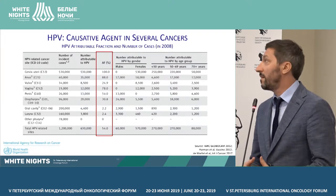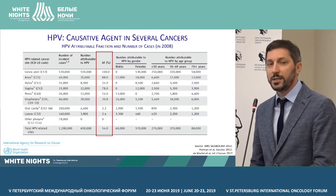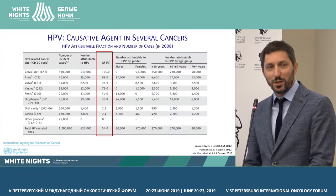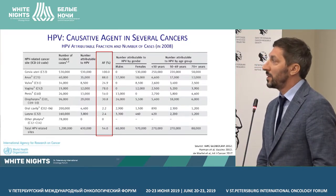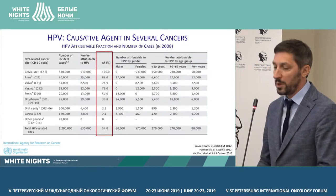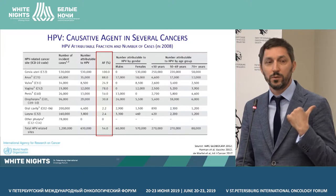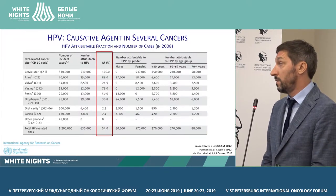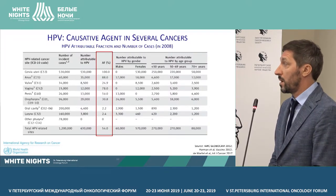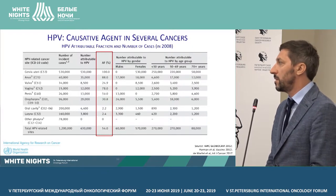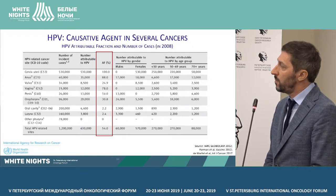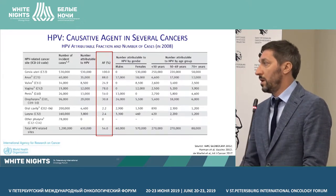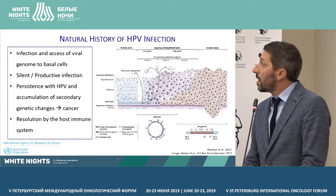HPV has been approved as a factor leading to different types of cancer. It is responsible for 100% of cervical cancer and over 90% of anal cancer. It is also responsible for a large share of vaginal cancers, about 20% of vulvar cancers, about 10% of penile cancers, and no less than 30% of oropharyngeal cancers and other organs.